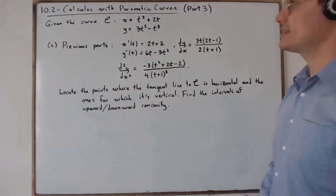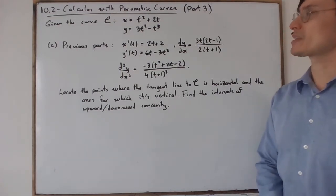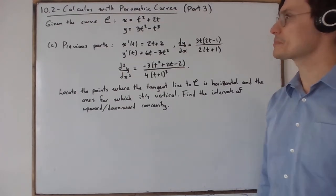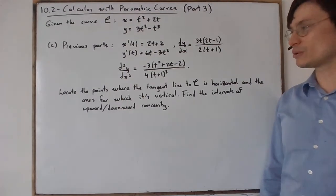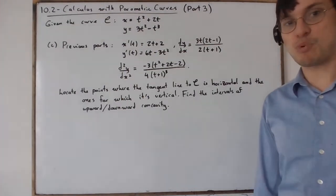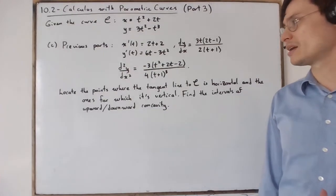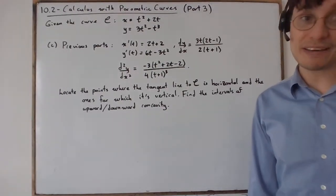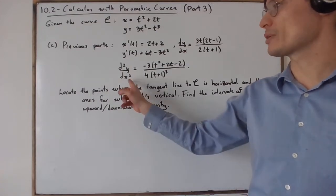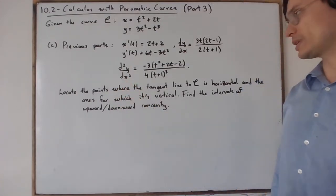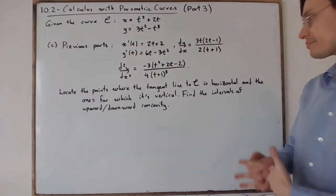Hi Calculus 3 students! This is the third part of the end of section exercise on calculus with parametric curves. In this part we have a little bit more on our plate. Given this curve — the same as in part 1 and part 2 — we want to locate the points where the tangent line is horizontal, the points where the tangent line is vertical, and determine the values of t for which the curve is concave upward and concave downward in x, using the second derivative of y with respect to x. All of these steps were performed in part 2 and now we're about to use them.